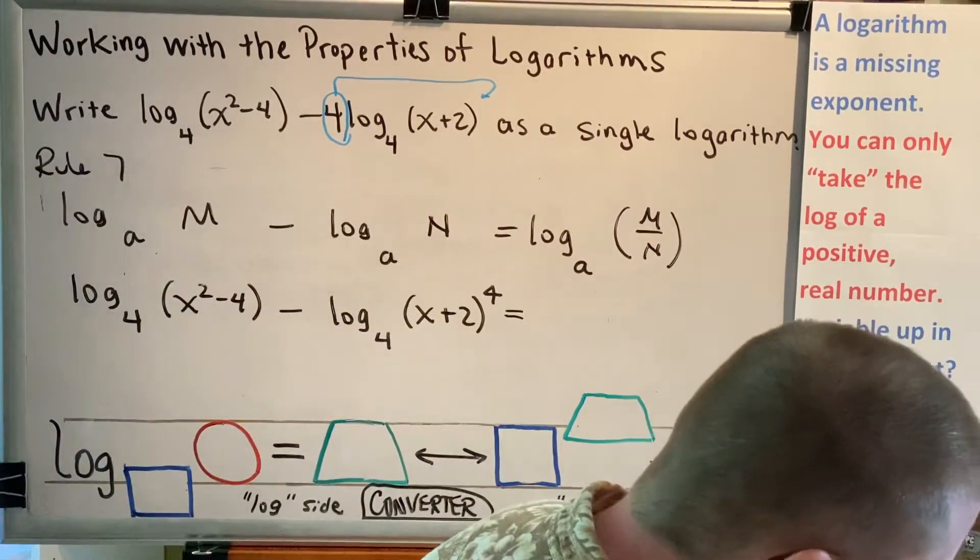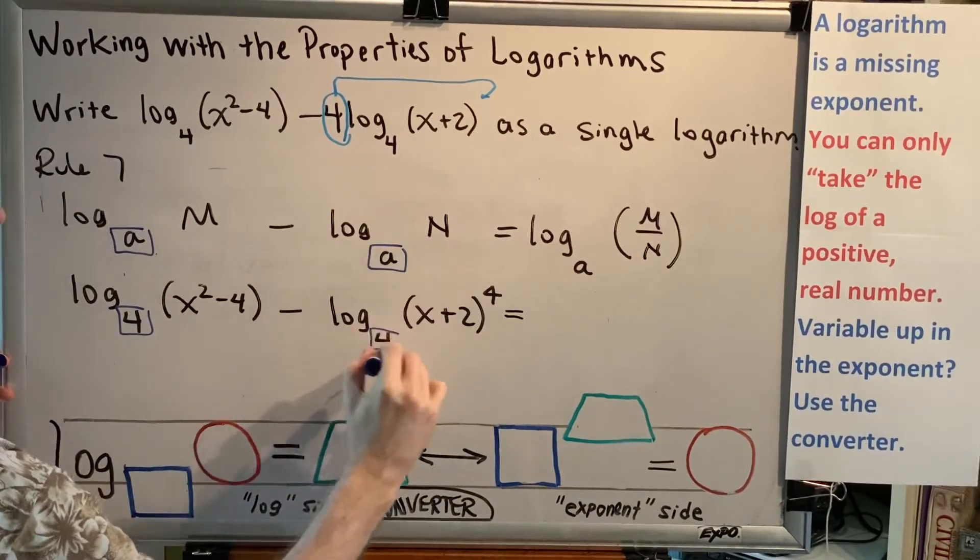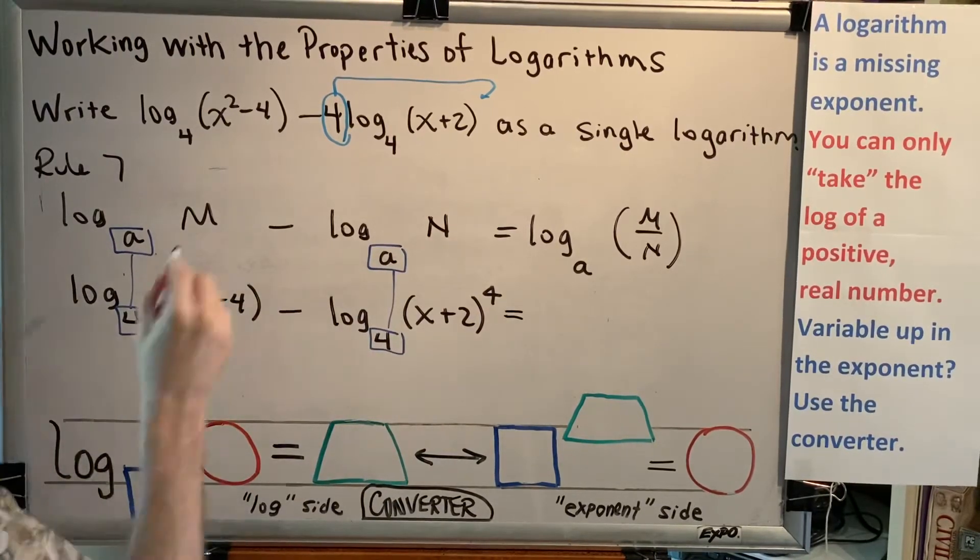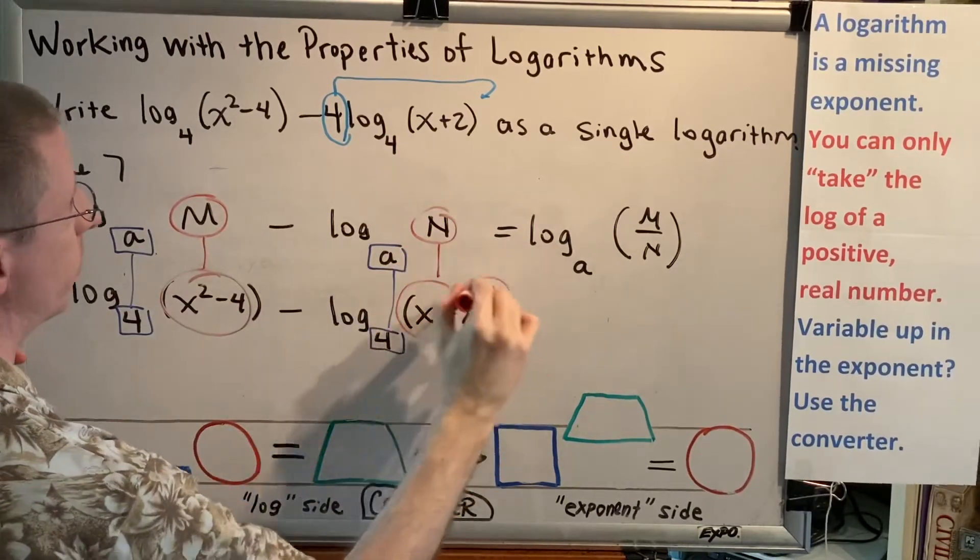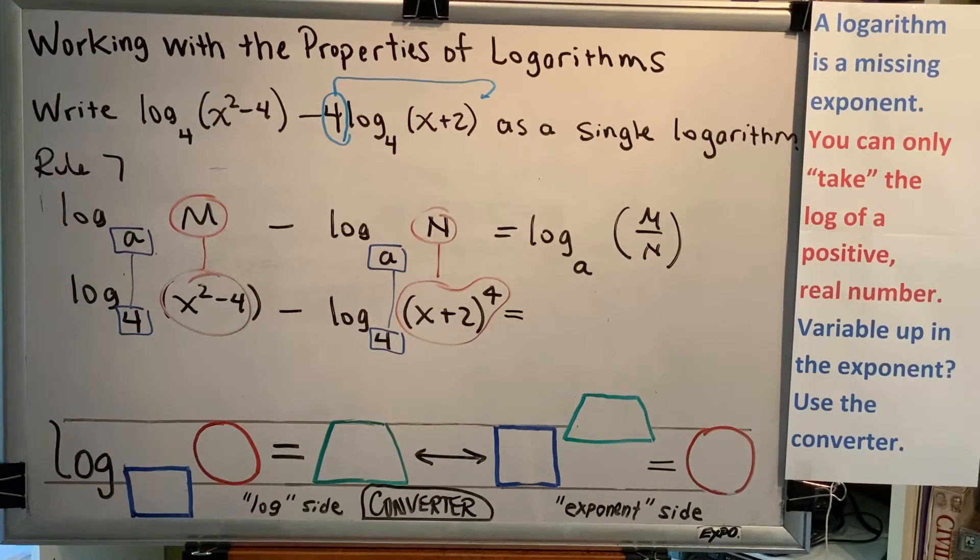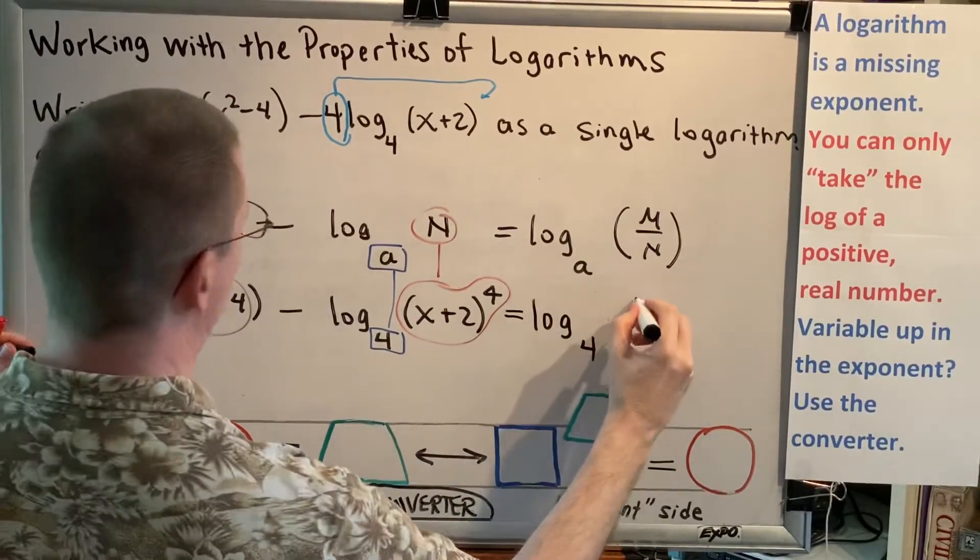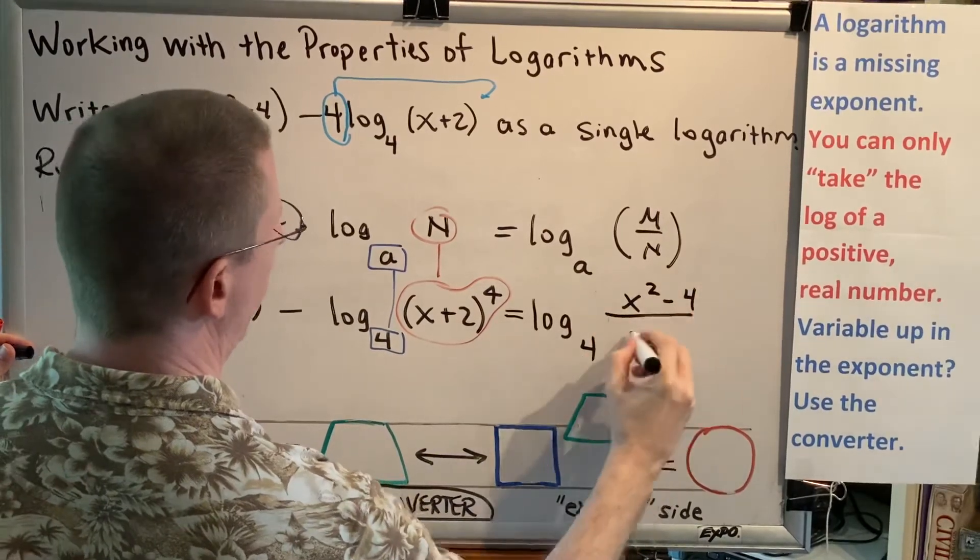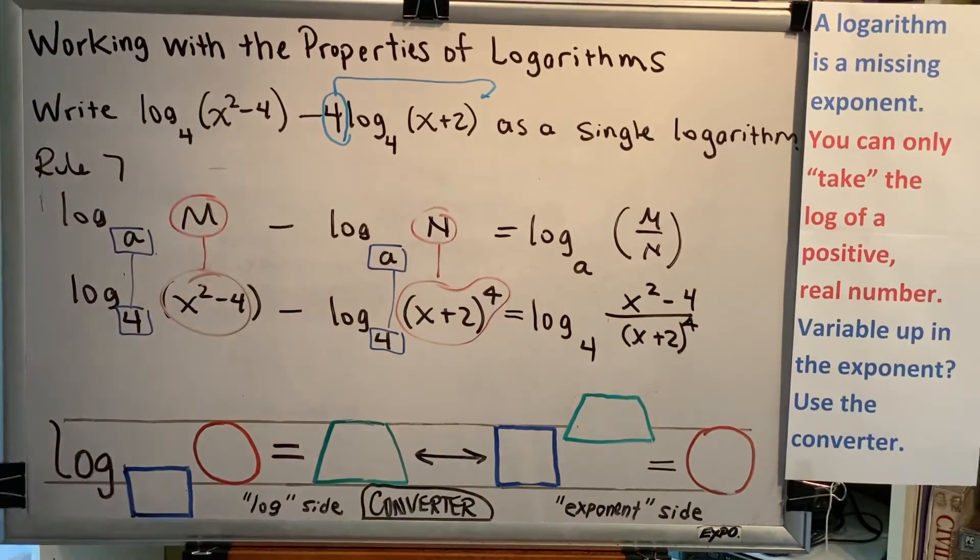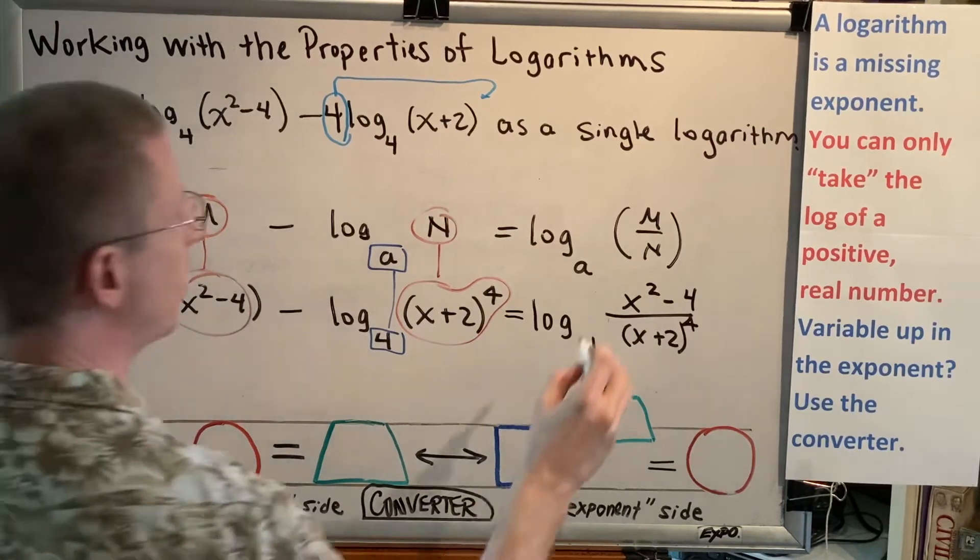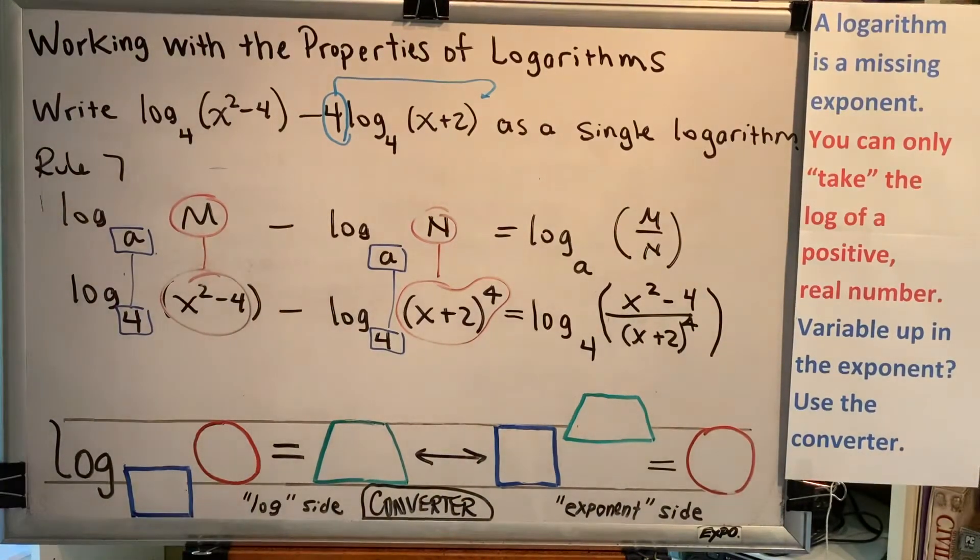We notice that when we compare the log rule with the information that we are given, everywhere we see an a, we have a 4. Our first argument m corresponds to x squared minus 4. Our second argument n corresponds to x plus 2 to the 4th power. So when we combine these two logarithms into one, we keep the base the same, log base 4, and divide the two arguments. So we get x squared minus 4 as the numerator, and x plus 2, all in parentheses raised to the 4th power, as the denominator. Sometimes you will see the entire fraction put in parentheses for clarity to indicate that the entire fraction is the argument of the log.